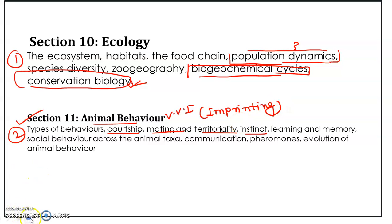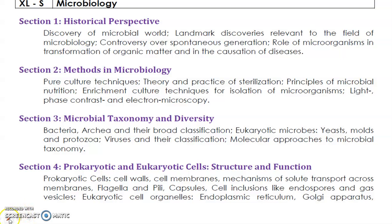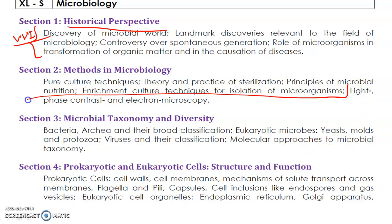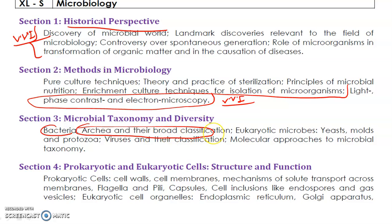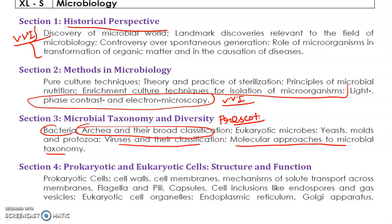Now coming to the microbiology paper. The historical perspective is very important. Methods in microbiology — particularly microscopy — is a very important area for the exam. In microbial taxonomy, know the differences between Archaea and Eubacteria, including methanogens, thermoacidophiles, and halophiles, as well as molecular approaches to microbial taxonomy. For viruses and their classification, Prescott is a good textbook. Also study prokaryotic versus eukaryotic cell structure, functions, and differences.